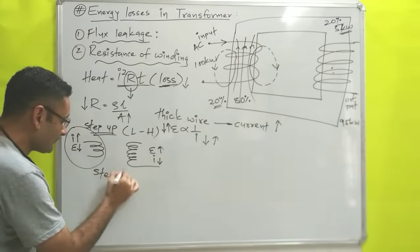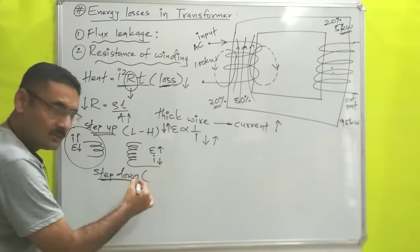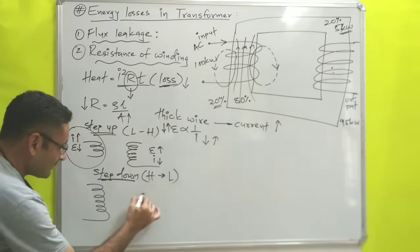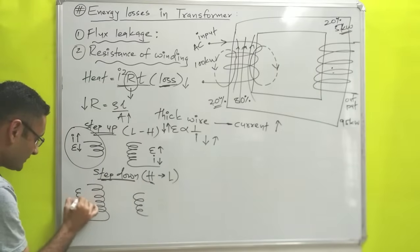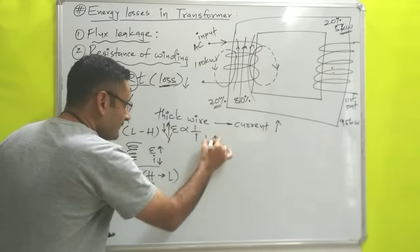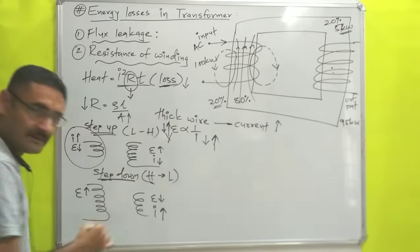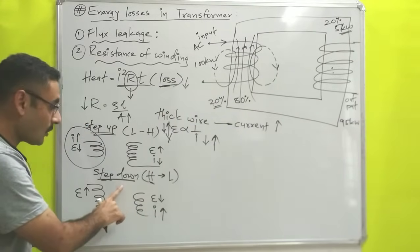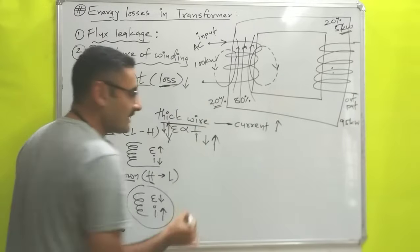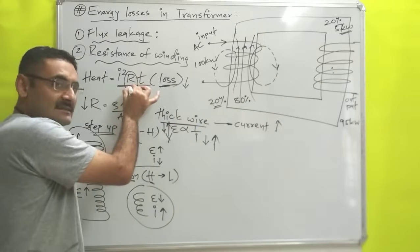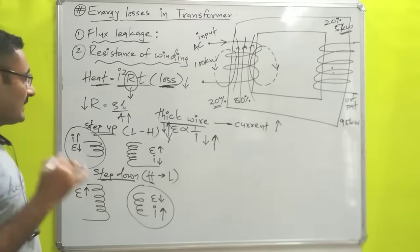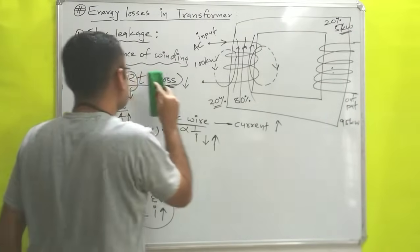Similarly, for a step-down transformer: whatever high voltage is there, it converts into low voltage. On the primary side voltage is high, and on the secondary side voltage is low. If EMF is low, then current will be high. So in the case of a step-down transformer, on the secondary side where current is high, we take thick wire — to decrease resistance so that heat losses are decreased and maximum power can be transmitted.